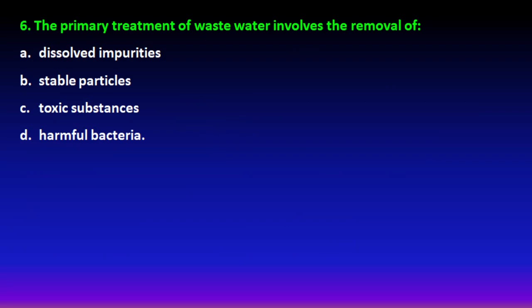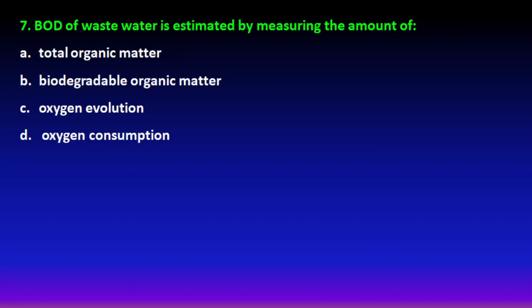Next question: the primary treatment of wastewater — the very first treatment applied to sewage water. In primary treatment, grits, wrappers, and stable particles present in it are removed. So option B is the right answer — in primary treatment, grits, particles, papers, and wrappers are removed from the water.